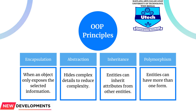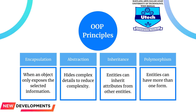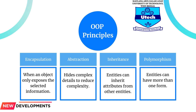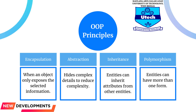Inheritance: classes can reuse code from other classes. Relationships and subclasses between objects can be assigned, enabling developers to reuse common logic while still maintaining a unique hierarchy. This property of OOP forces a more thorough data analysis, reduces development time, and ensures a higher level of accuracy.